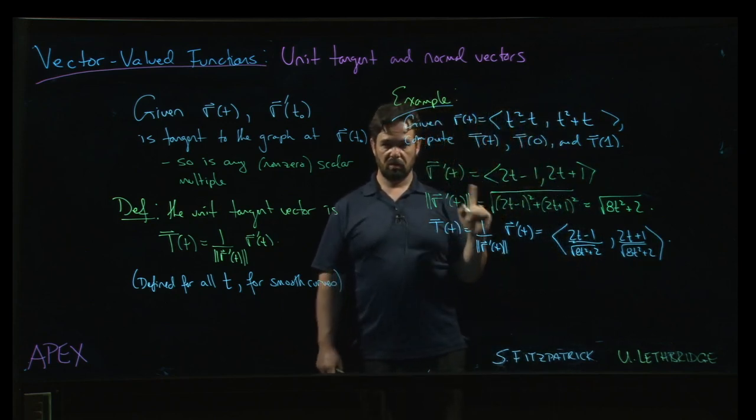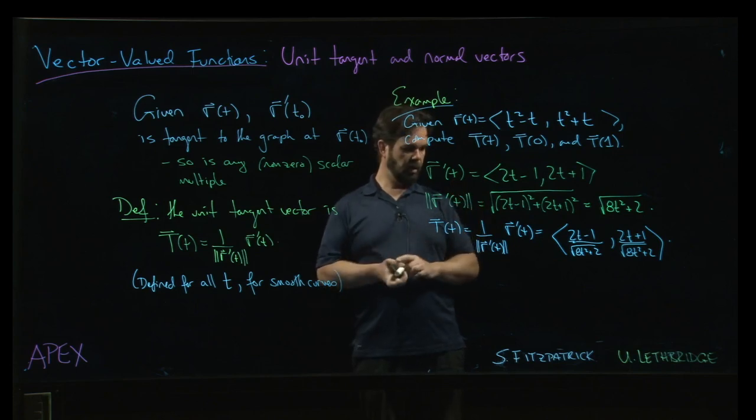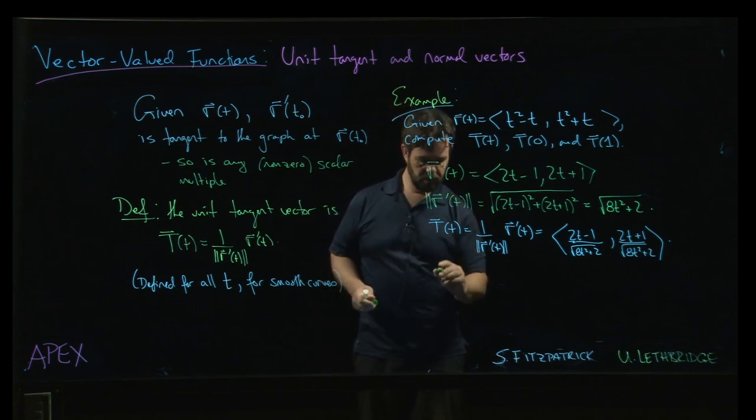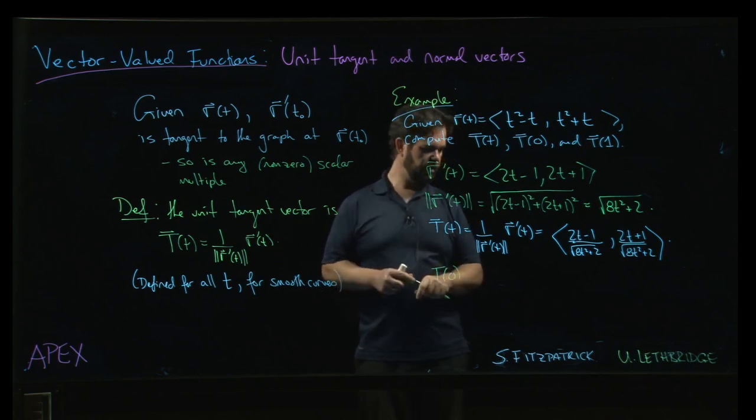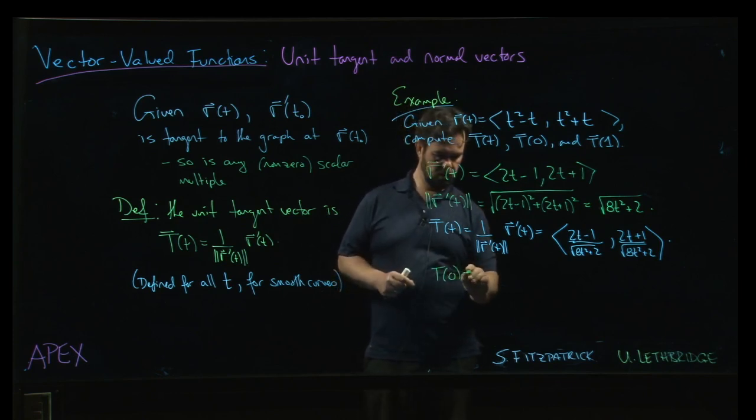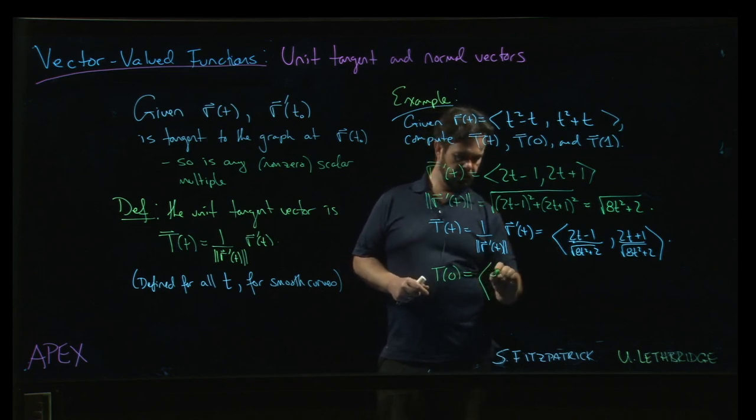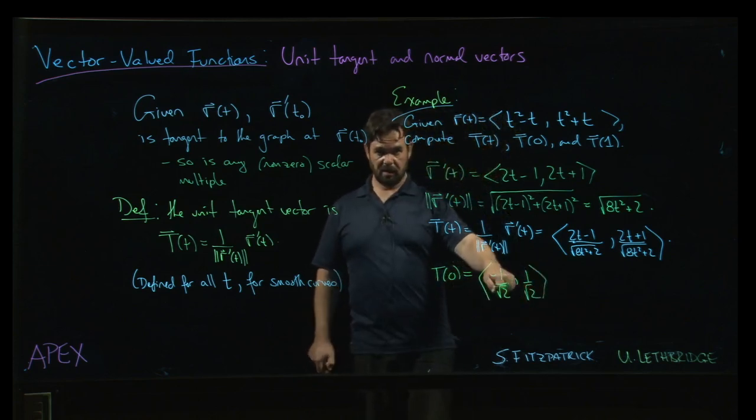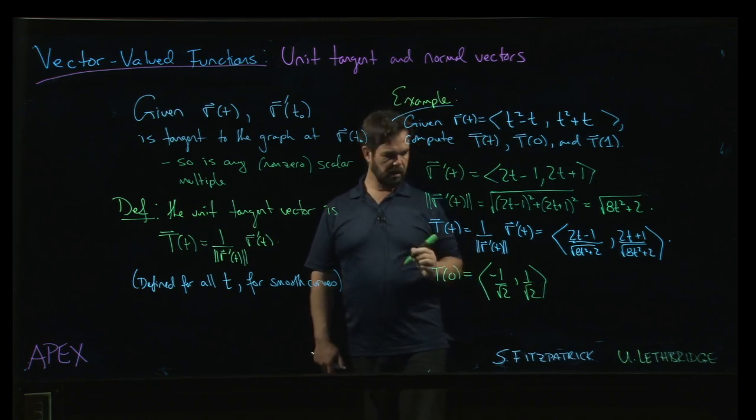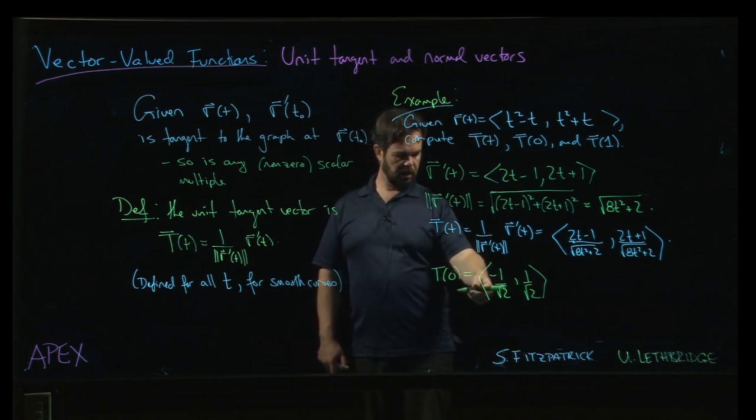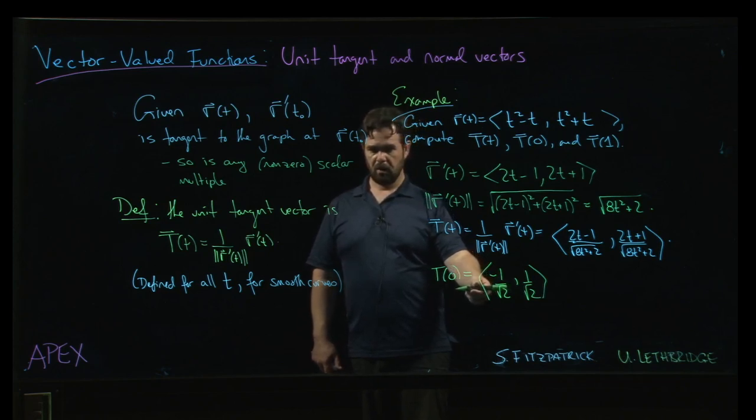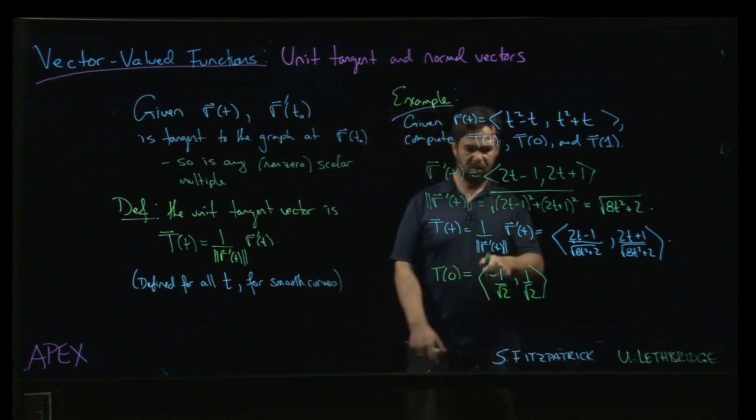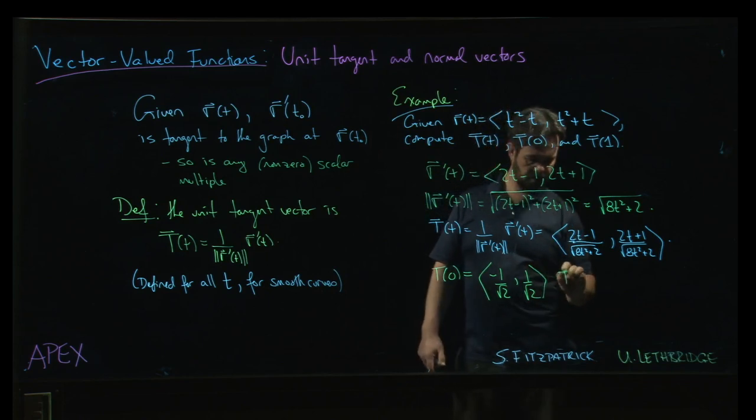And, just like the last one, we'll try to evaluate it at a couple of different points. If we want to do t at 0, well, we're going to get minus 1 over the square root of 2 and then 1 over the square root of 2. And, that is indeed a unit vector. In fact, that's a unit vector corresponding to what theta is 3 pi over 4. If you want to do the cos theta sine theta sort of format.